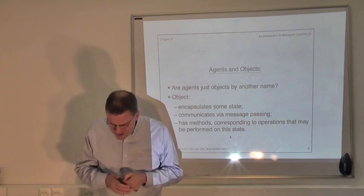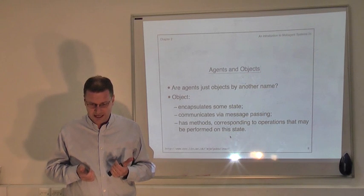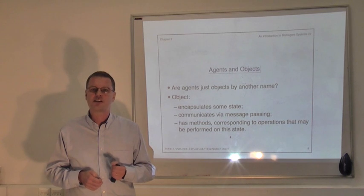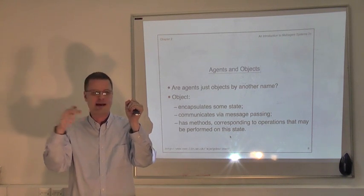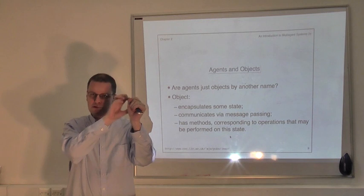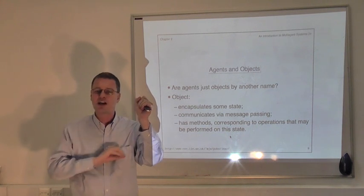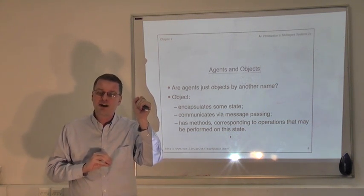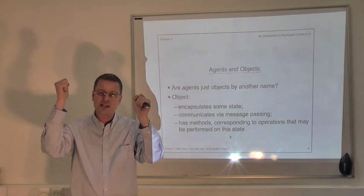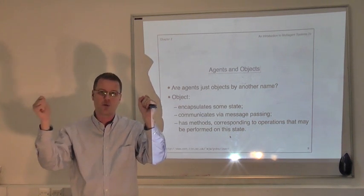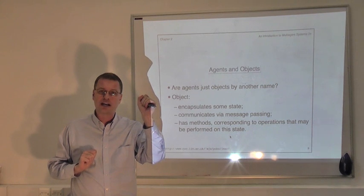So let's consider how this relates to the notion of an agent. Suppose we have two objects: object O1 and object O2. Object O1 provides some publicly accessible method — that is, within its interface, it has some action or service available to other objects. Object O2 knows about O1 and can directly invoke that method upon O1.